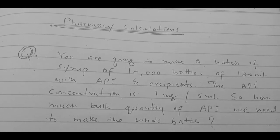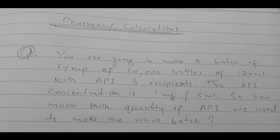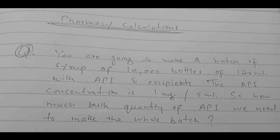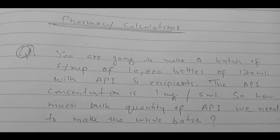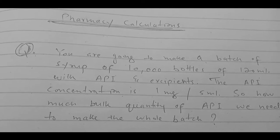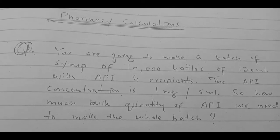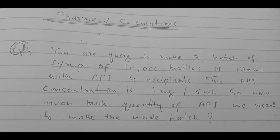Hello my dear pharmacist friends, welcome to this new video of pharmacy calculations. Our question for today is: You are going to make a batch of syrup of 10,000 bottles of 120ml with API, that is active pharmaceutical ingredient,